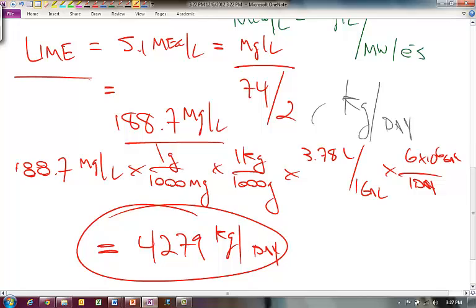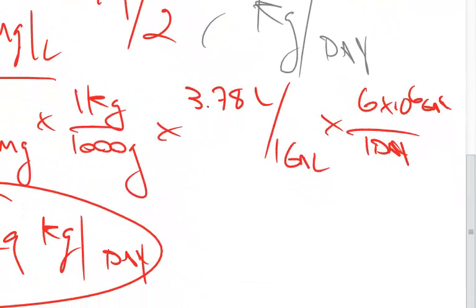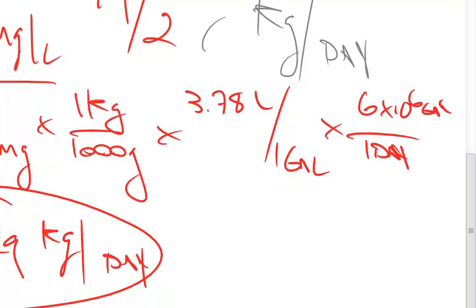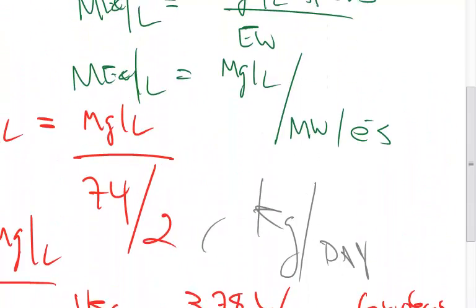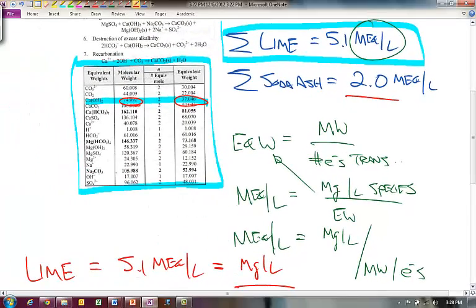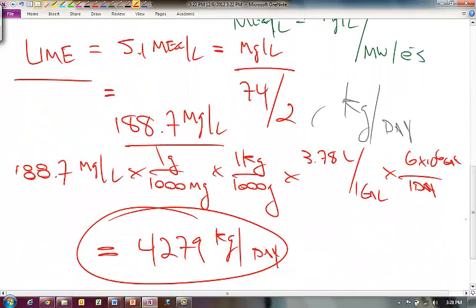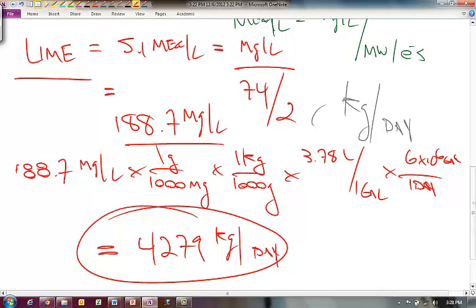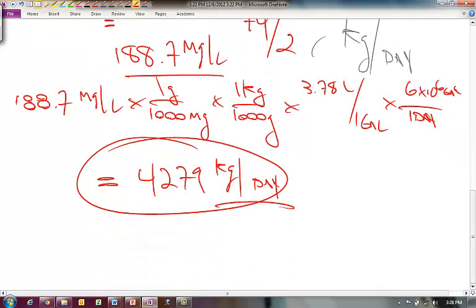We can do the same calculation for soda ash using Na₂CO₃, which has a molecular weight of about 105–106 and an equivalent weight of 53. That should clarify the last step of this lime softening plant calculation in kg/day. My value falls in the middle of the range you might get with your own work, so good luck and we'll talk later.